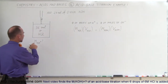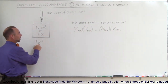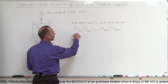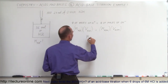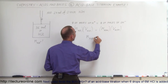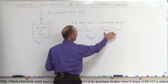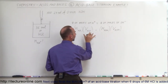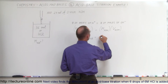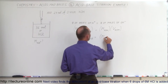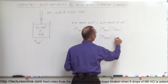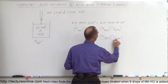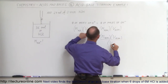What are we looking for? We're looking for the molarity of the hydrochloric acid. We're going to solve for that quantity, so we can say that the molarity of the hydrochloric acid equals the molarity of the potassium hydroxide times the volume of the potassium hydroxide, all divided by the volume of the hydrochloric acid.